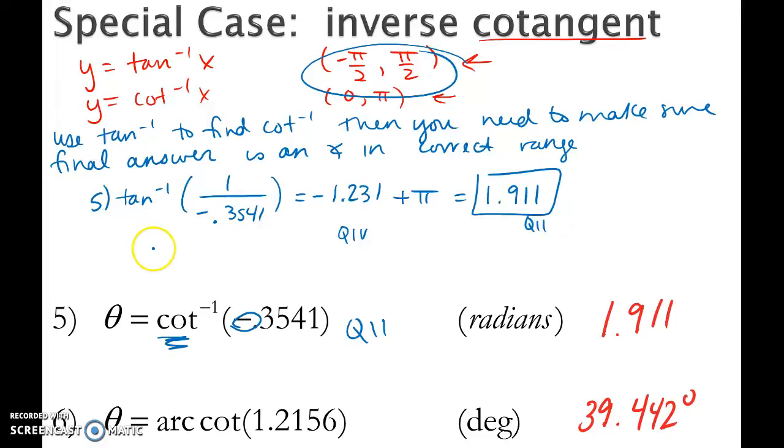Now when I do problem number 6, I don't have to worry about this because in problem 6, when I do tan inverse, I have 1 divided by 1.2156. This is a positive angle or a positive ratio. In both tangent inverse and cotangent inverse, when the ratio is positive, they return an angle that is in quadrant 1.